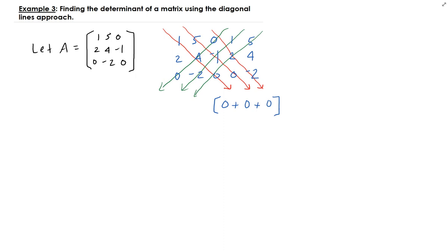Over here you're going to get 1 times negative 1 times negative 2 so that will be 2. Make a space for the sign there plus 2, and then 5 times 2 times 0 which is going to be 0.